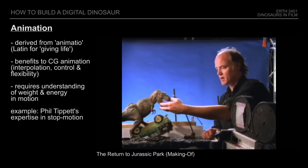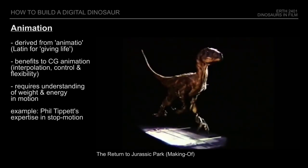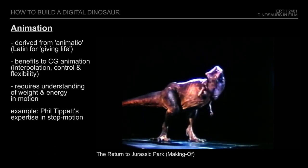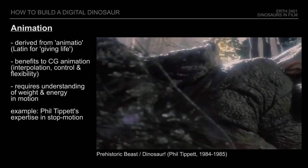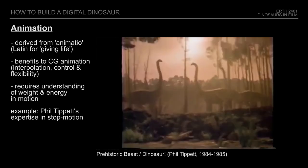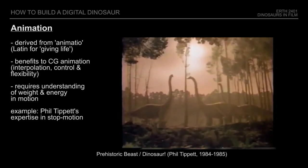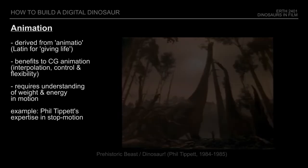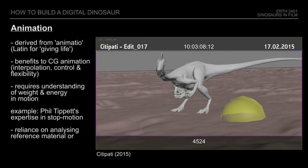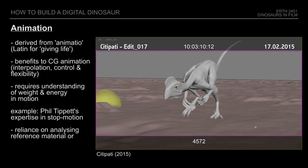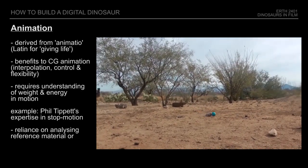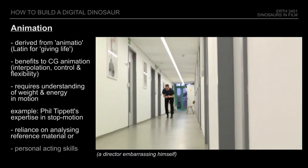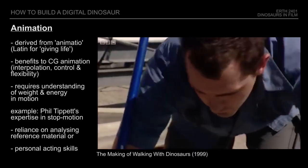Phil Tippett and his team, who were originally supposed to animate Jurassic Park's dinosaurs with stop-motion, were later actually brought on to work on the CG animation because of their expertise — also counting in that Tippett himself had already worked on a few dinosaur projects, most of them animated in his own garage. Finding the right performance sometimes involves researching movement and behaviors based on approximation, for example by finding a modern-day example as reference to study, or might even require some acting capabilities and simply pretending to be a dinosaur.